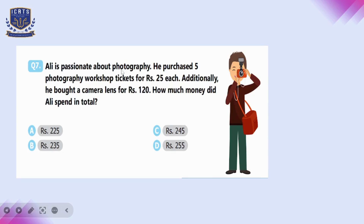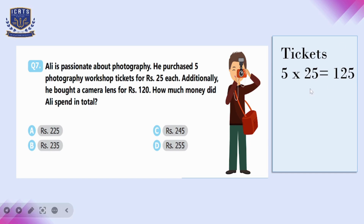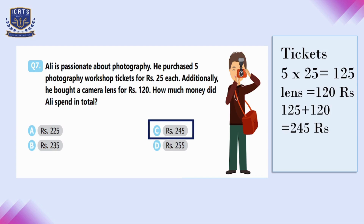Question number seven: Ali purchased five photography workshop tickets at rupees 25 each, spending 125 rupees in total. He also bought a camera lens for rupees 120. Adding 125 and 120 gives a total of rupees 245. So option C is the correct answer.